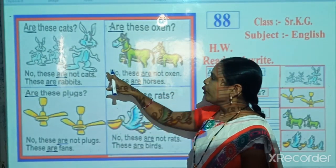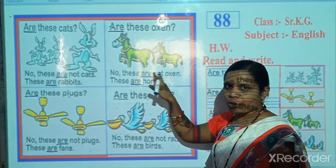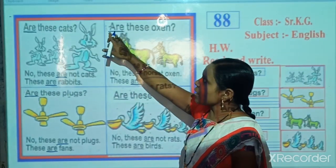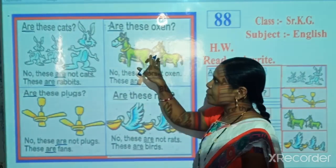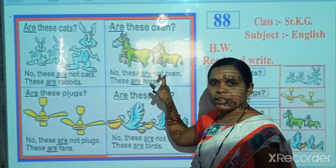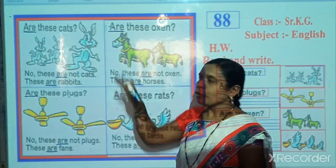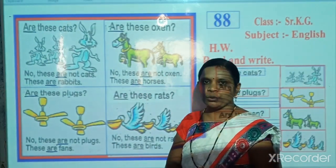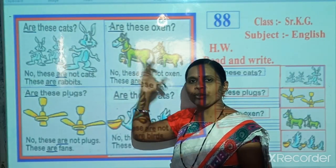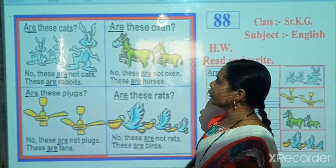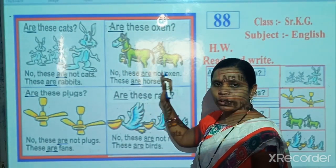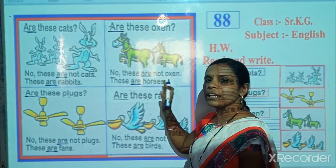When we ask a question about this object, that time we use 'Are'. And when we reply about this object, that time also we use 'Are'. Both times we use 'Are' because here are more than one object or many objects. Now read: Are these oxen? No, these are not oxen. These are horses.